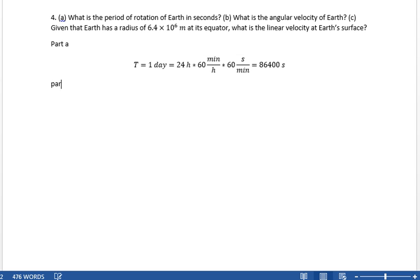Part B. What is the angular velocity of the Earth? Well, the angular velocity, if you remember, is 2 times pi times the frequency. And the frequency is just 1 over the period. So the angular velocity is 2 pi divided by the period.